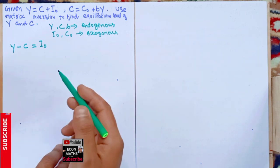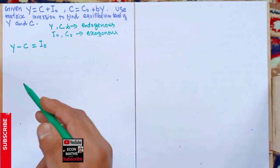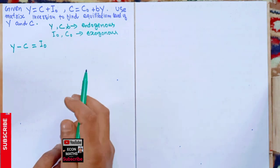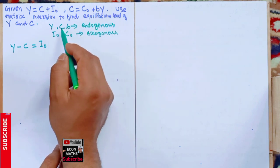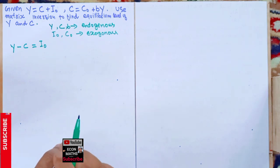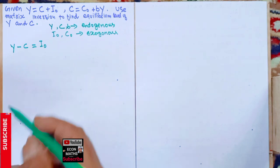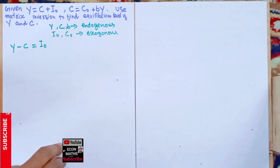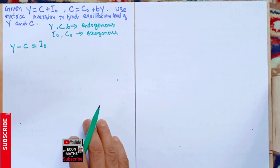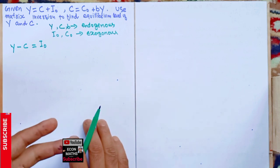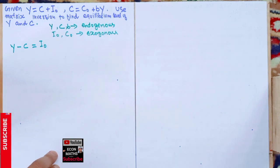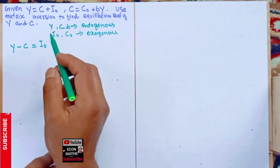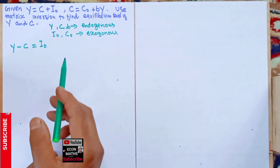We have to use matrix inverse to find the values of Y and C. One thing to remember: Y (income), C (consumption), and b (marginal propensity to consume) are endogenous variables — variables determined within the system. Variables determined outside the system are called exogenous variables; they are fixed and already determined outside the system.